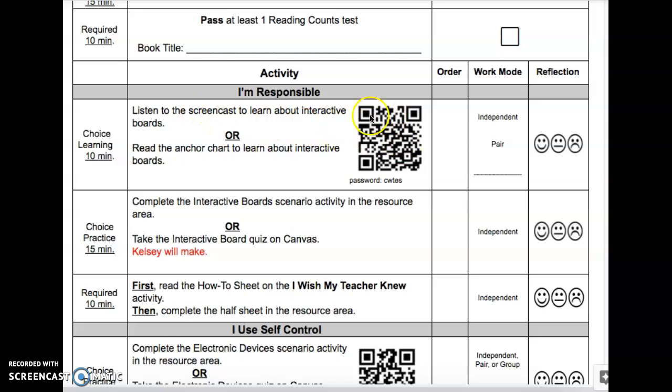You will do this by clicking the QR code and then the password is going to be CWTES. Or your other option is to read the anchor chart to learn about interactive boards. You can find that in your classroom. You can ask your teacher where that's located. You need to also make sure that you let us teachers know if you completed it independently or if you completed it with a pair, you can let us know who you completed it with.